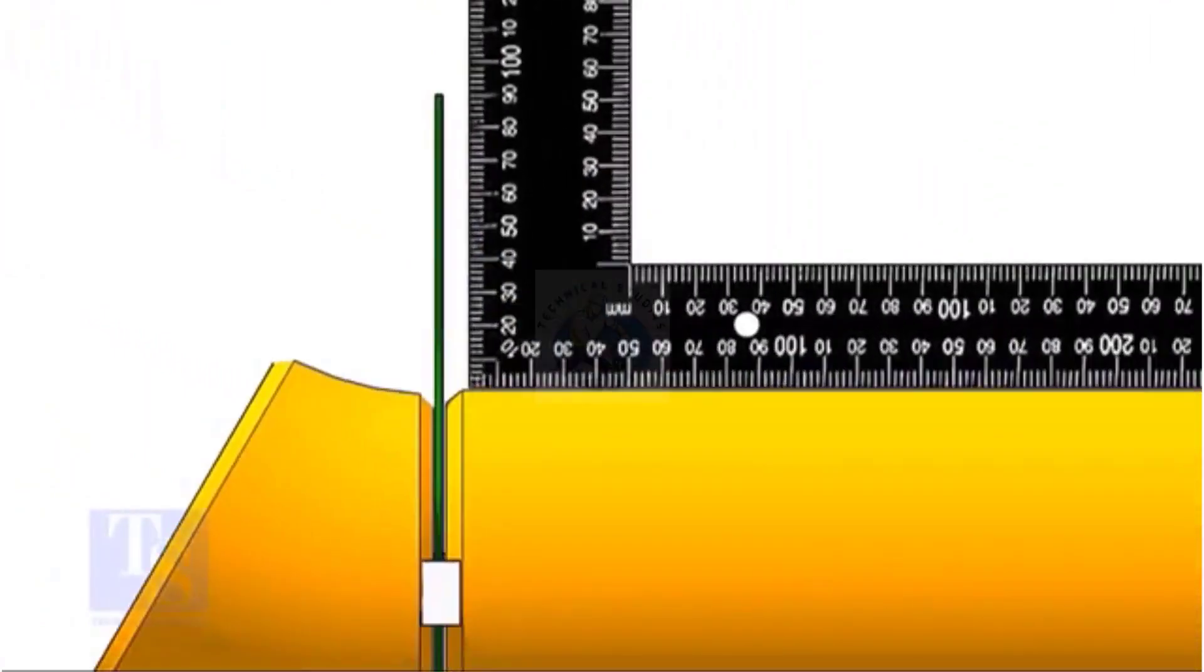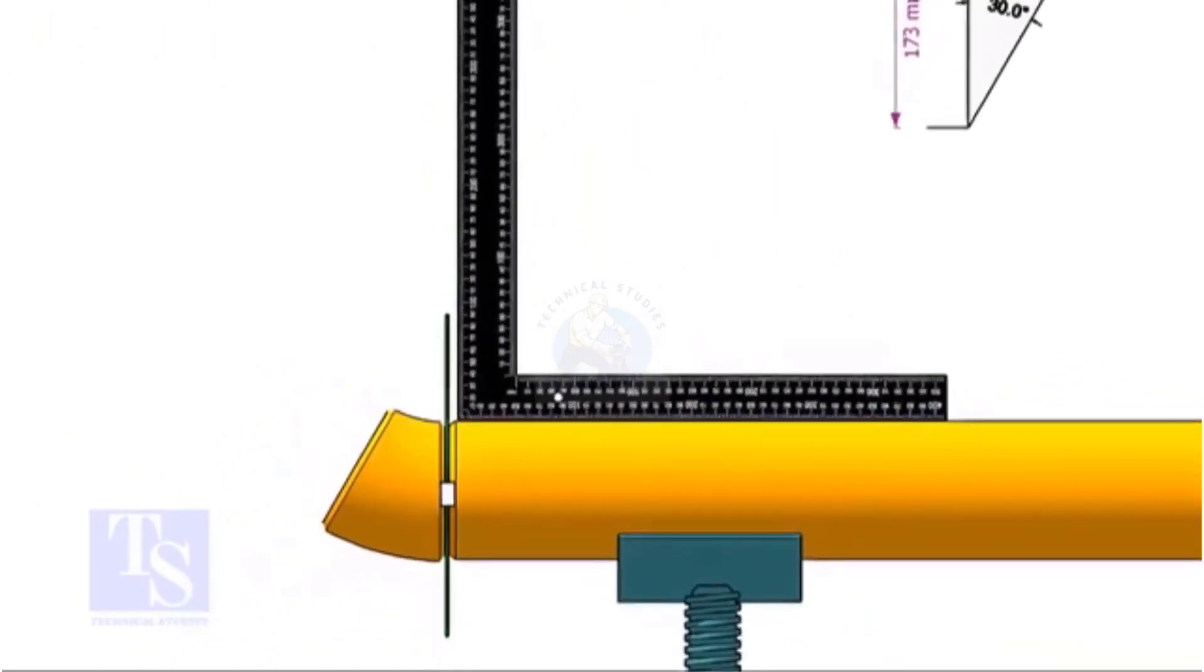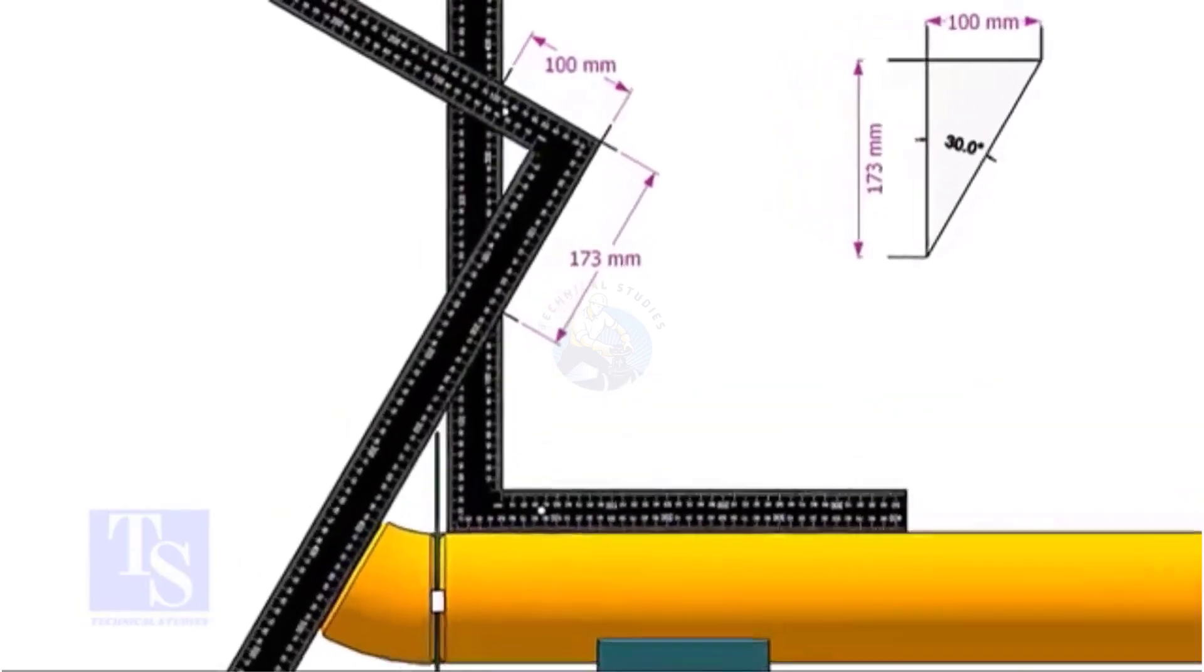After tack welding on both sides of the joint, hold another right angle on the edge of the pipe. Put the right angle on the face of the elbow as shown.